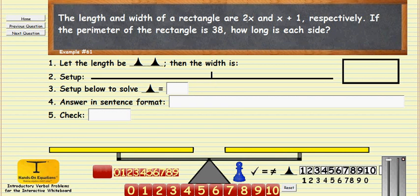So if the length is 2x, here we have the length represented by two blue pawns. And the width is x plus 1, so let's represent that with a pawn and one cube. And let's also place these dimensions on the rectangle itself.